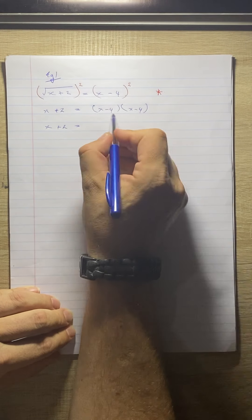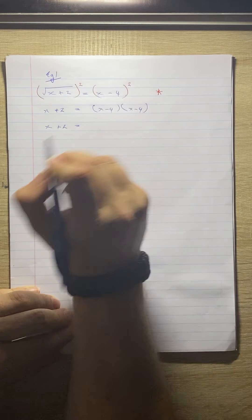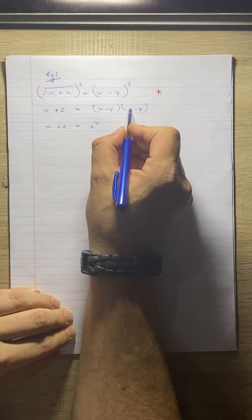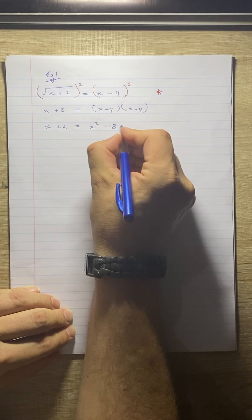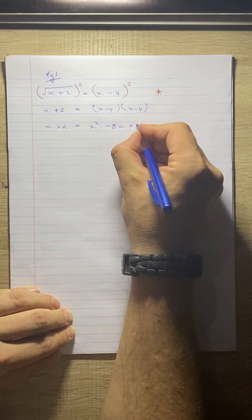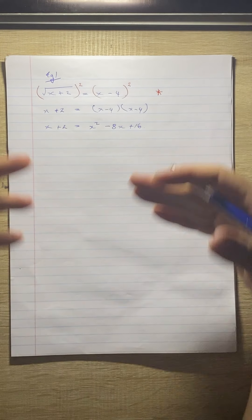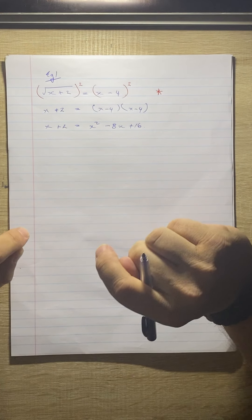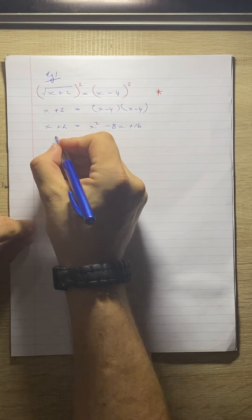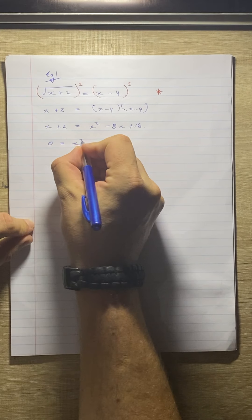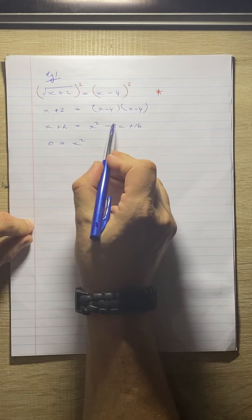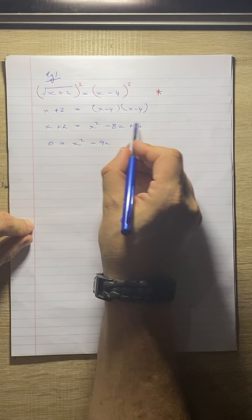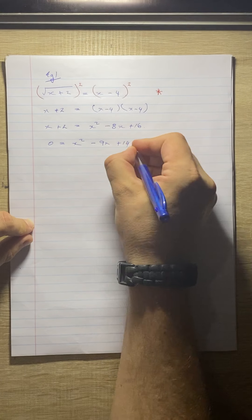All I do here is FOIL out — first, outer, inner, last. The firsts give us x squared. The outers give us minus 4x. Inners minus 4x, so we get minus 8x. And the lasts give us plus 16. Now we've got just a normal equation. I'm going to take everything to the right-hand side so that our highest power of x is positive. We get 0 equals x squared, take the x to the other side it becomes minus so we get minus 9x, and take the 2 to the other side it becomes minus and we get plus 14.